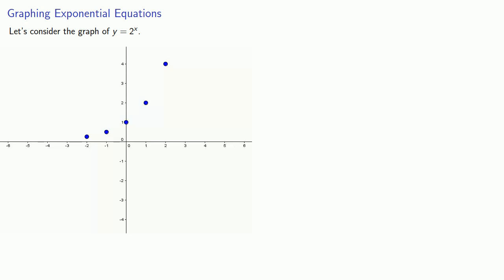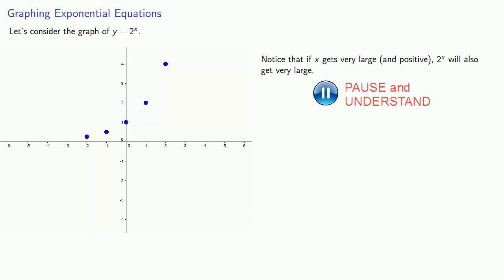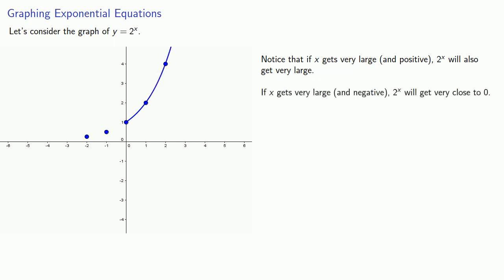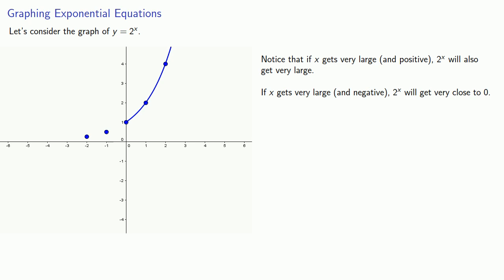We could plot a lot more points, but let's also look at some end behavior. Notice that if x gets very large and positive, 2 to the power x will also get very large, and the right side of the graph is going to shoot off to infinity. On the other hand, if x gets very large and negative, 2 to the power x will get very close to 0, so as we go to the left, our graph approaches the x-axis. This means that y equals 2 to the power x will have an asymptote of y equals 0.